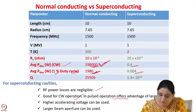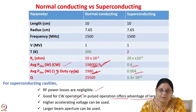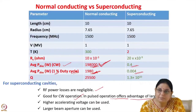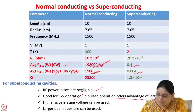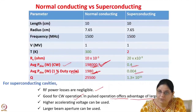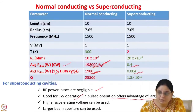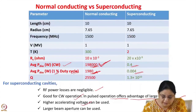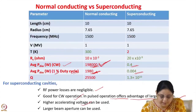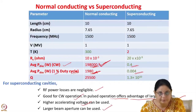In pulsed operation, superconducting cavities offer the advantage of large aperture. If the beam current is high, the beam size could be large and there could be losses. In normal conducting cavities, to improve the shunt impedance the beam aperture is kept small, but in a superconducting cavity you can increase the beam aperture to reduce beam loss. Higher accelerating voltage can also be used, allowing you to reduce the total size of the accelerator.